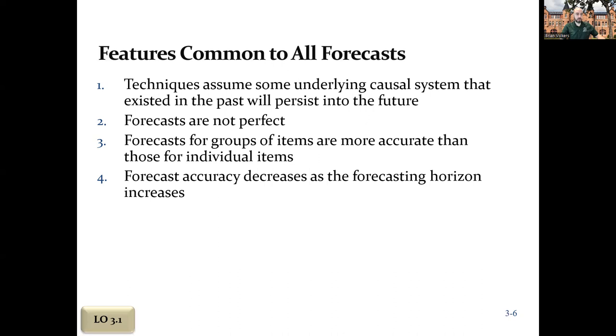Forecasts for groups of items are more accurate than those for individual items. If I'm trying to tell you a forecast for total sales, that's going to be a lot more accurate than if I say the forecast for sales of this SKU or this particular item. You're going to be a lot more accurate the broader you are because typically the records are better.